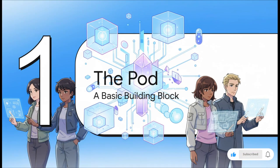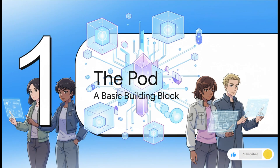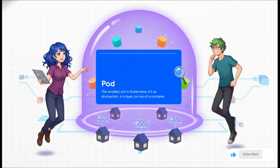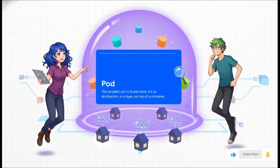So how does Kubernetes bring order to all this chaos? It gives us a simple set of building blocks. The most fundamental one you need to know is called the pod. The keyword here is abstraction — Kubernetes doesn't manage your containers directly. Instead, it wraps them inside a logical thing called a pod. Think of a pod as a little home for your container. It gives it a place to live, its own network address, everything it needs. It is the smallest, most basic unit in the entire Kubernetes world.